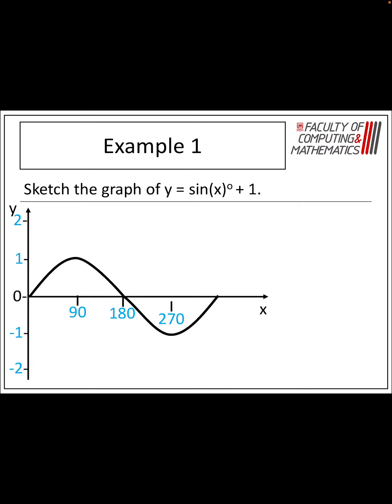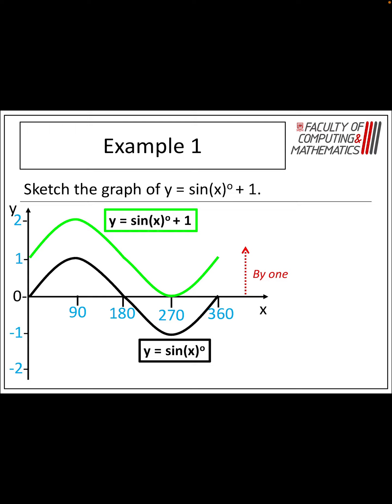What I would like candidates to do is sketch the graph of sine x first — they know it, they're comfortable with it — and then draw the graph of sine x plus 1, because these graphs can get quite complicated if we add in an amplitude, a period, and a vertical shift. We want to move all of it up by 1, which affects the maximum and minimum values. As you can see, I've now got a maximum value of 2 at 90 degrees, and a minimum value of 0 at 270 degrees. The amplitude is 1 — you take the maximum and minimum values and divide by 2 — and the period is still 360 degrees.